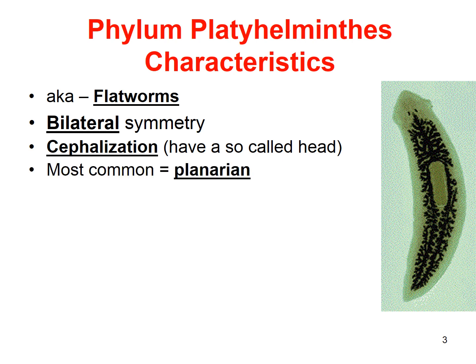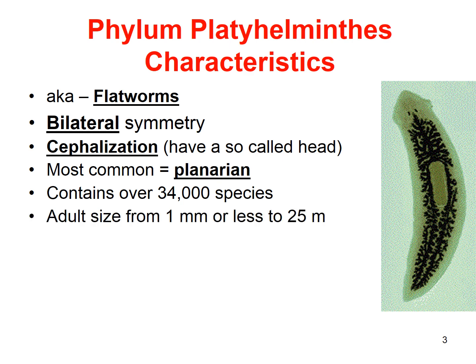The most common flatworm is the planarian. I get them from my pond — they happen to be carnivorous, so I hang some cooked egg in a gauze pocket in the water overnight, and in the morning they're kind of in there, attached. Then I'll bring them in. This phylum contains over 34,000 species of flatworms.